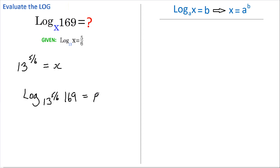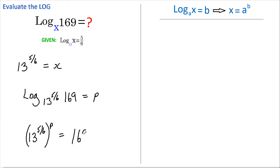Therefore, again using this relationship, we can rewrite this as 13 to the power of 5/6, all to the power of P, equals 169.